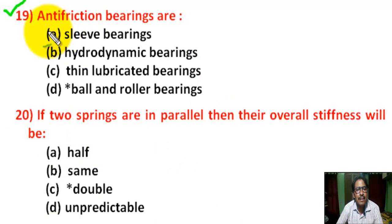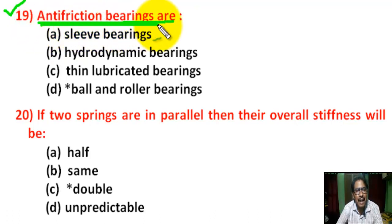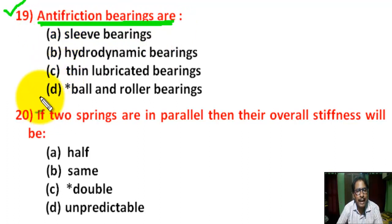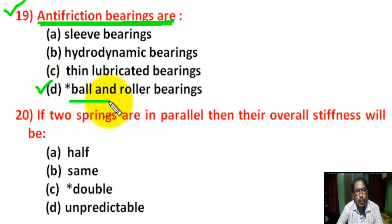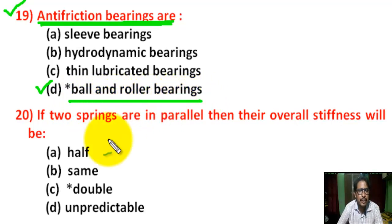Question number 19: anti-friction bearings are — there are 4 options. Correct answer is D: Ball and roller bearings.